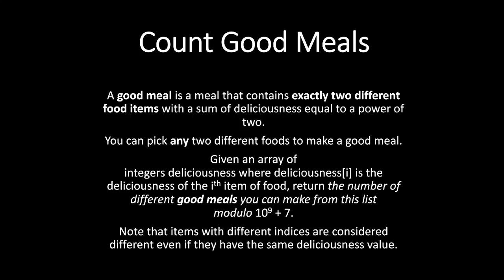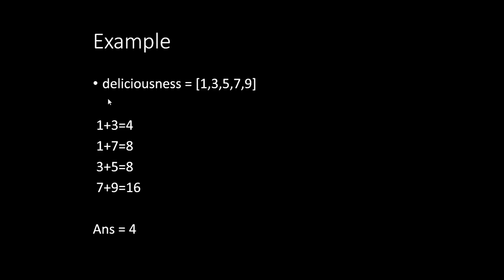First let's see an example, then we'll proceed to the solution. We have the deliciousness array with given values. We need to find the pairs whose sum equals a power of 2. The answer is 4 because only 4 pairs have a sum equal to a power of 2.